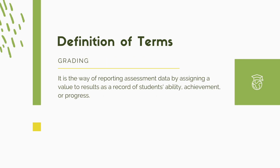We also have grading. Grading is the way of reporting assessment data by assigning a value to results as a record of students' ability, achievement, or progress. This is evident in the progress report cards used in the Department of Education. For grades, there are specific transmutation tables, and there is a corresponding value for a particular level of grades reached — for instance, what grades are equivalent to 'excellent.' There is a corresponding value for each of those descriptors, and those are used for the purpose of grading.